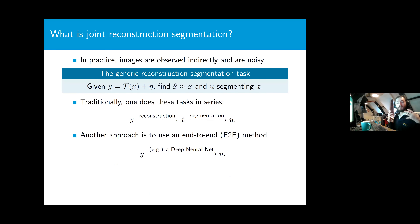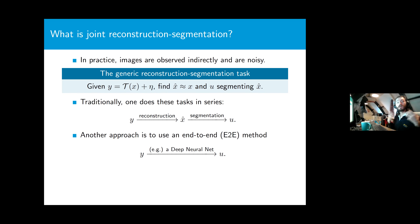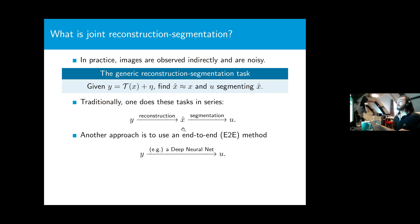In practice, the images we observe are going to be observed indirectly and noisily. We have measurements y generated by some transformation of our image x plus some noise, and then we want to reconstruct image x and segment that reconstructed image. Traditionally there are two methods for this joint reconstruction segmentation task: the first is to do it in series — first reconstruct, then segment.